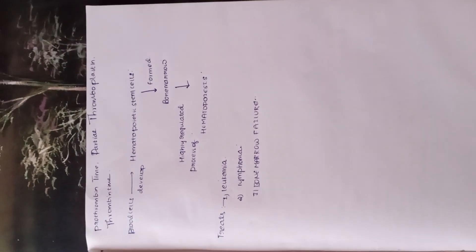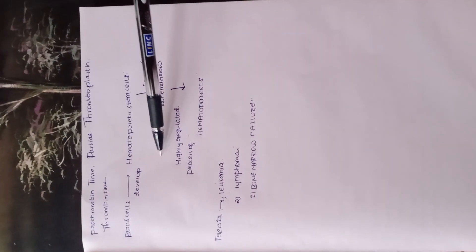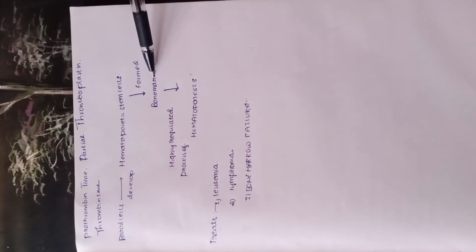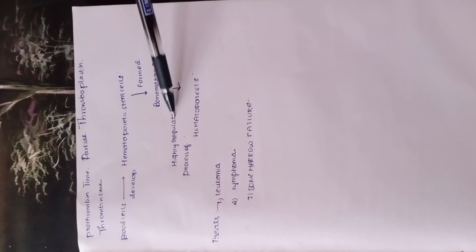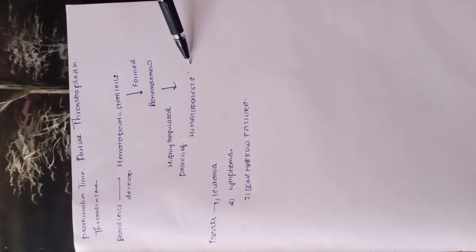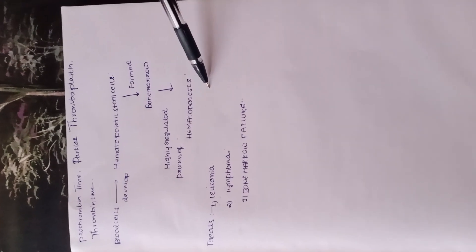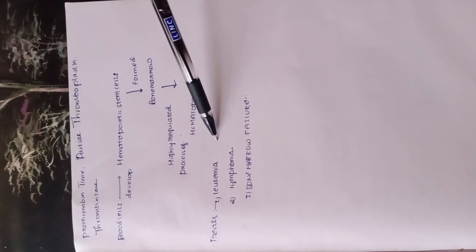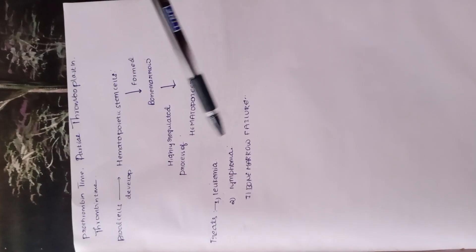Blood cells develop from hematopoietic stem cells formed in the bone marrow through a highly regulated process called hematopoiesis — the formation of blood cells. Note: erythropoietin and hematopoiesis are different terms. Conditions treated in this area include leukemia, blood cancer, lymphoma, and bone marrow failure.